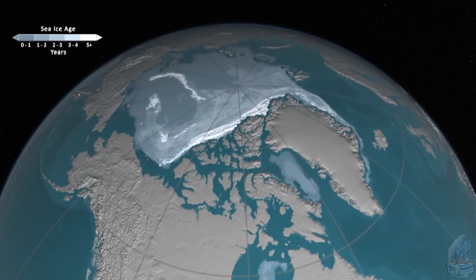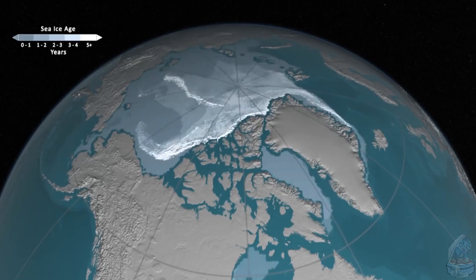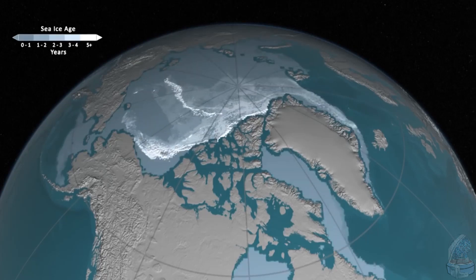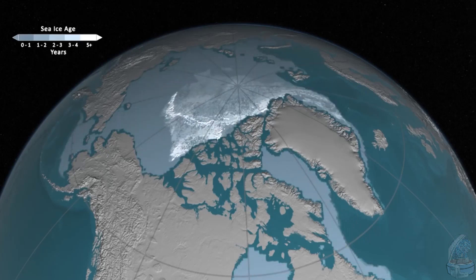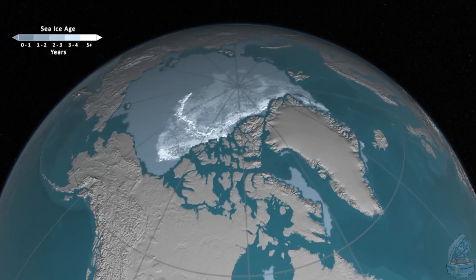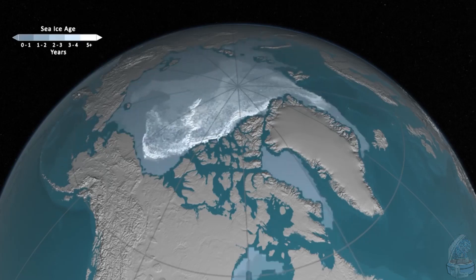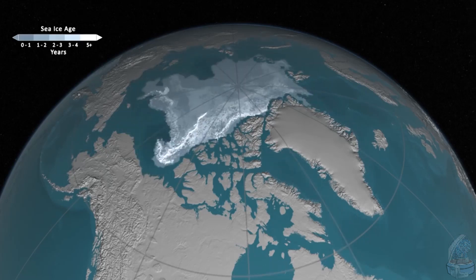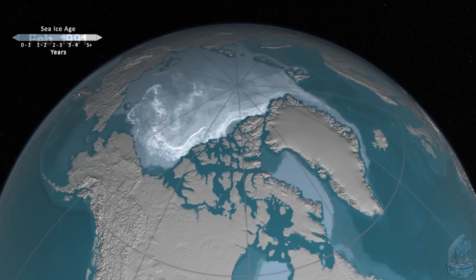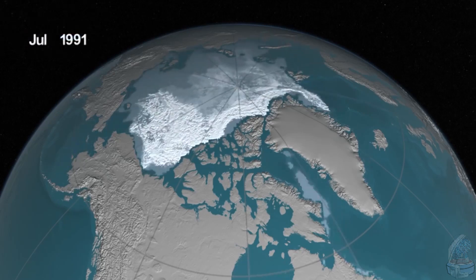That ice can keep spinning around, oftentimes for several years, gradually getting older and thus getting thicker. Eventually, the ice will spin out of that gyre and go out through Fram Strait.